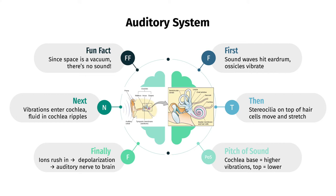As the stereocilia stretch, ion channels are mechanically opened, allowing ions to rush in and a depolarization to occur, which stimulates the auditory nerve connected to the hair cell. The auditory nerve then sends a signal to the brain, where it is interpreted as a specific sound we can recognize. Hair cells at the base of the cochlea sense higher vibrations, or a higher pitch, while hair cells at the top sense lower vibrations.